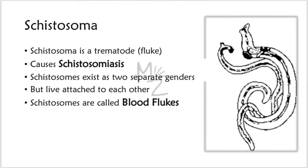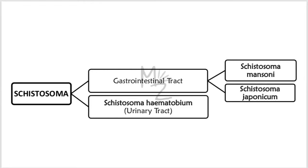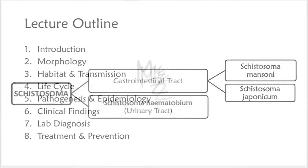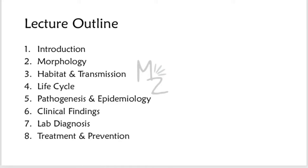Schistosoma is a trematode, a fluke. It is responsible for causing schistosomiasis. It exists as two separate genders — in the picture you can see the male and the female — but both live attached to each other. Schistosomes are also called blood flukes. Schistosoma is further classified based on location: for the gastrointestinal tract it is classified as S. mansoni and S. japonicum, and for the urinary tract it is classified as S. haematobium.